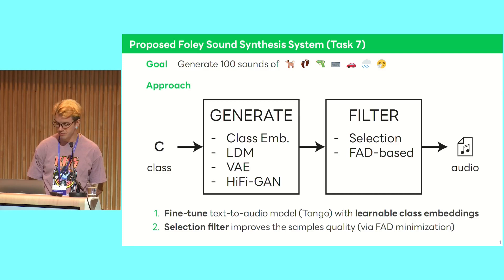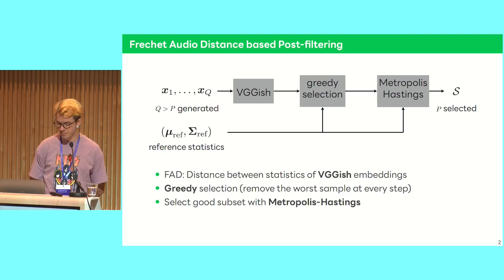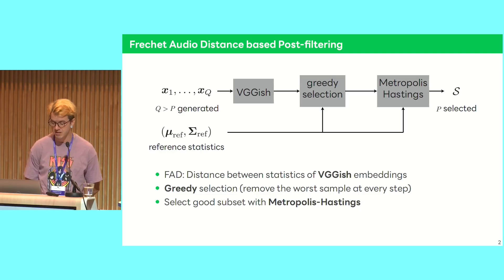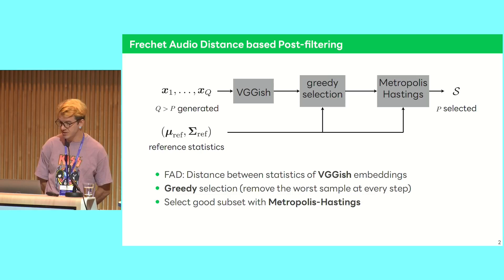We were not completely satisfied by the quality we got, so we added a post-filter. Instead of generating 100 samples, we generate 200 and then take the 100 best ones in terms of the Fréchet Audio Distance (FAD), which was the objective metric of the challenge. For post-filtering, we do a greedy selection: at each round we find the sample that by removing it will decrease the FAD most, then iterate until it no longer decreases. If we don't have 100 samples yet, we do a Metropolis-Hastings Monte Carlo Markov Chain optimization to get 100 samples with a good FAD score.